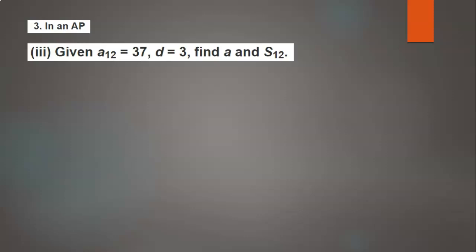Hello to everyone, welcome back to our channel. Today's question is: in an AP, given a12 = 37 and the common difference d = 3, find a (the first term) and S12 (the sum of 12 terms).